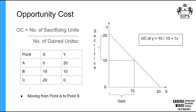Constant opportunity cost is identified as the case where the answer will be one all the time, and it will represent a straight line. This is explained in detail in our production possibility curves video series — find the link and check it.